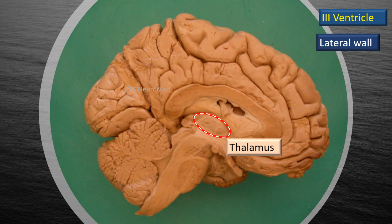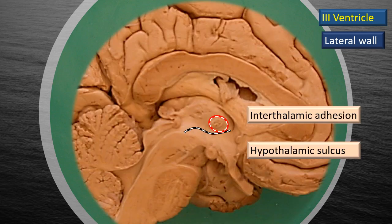The same thalamus we saw in the coronal section is now viewed in mid-sagittal section. We need to look at the thalamus in relation to several other structures. There is a curved blue-and-white line running roughly from the interventricular foramen to the upper end of the aqueduct of Sylvius — that is the hypothalamic sulcus. The area above it is the thalamus, and the circle right on the hypothalamic sulcus is the interthalamic adhesion, or interthalamic connexus, where the two thalami are joined. The entire area below the hypothalamic sulcus is the hypothalamus.